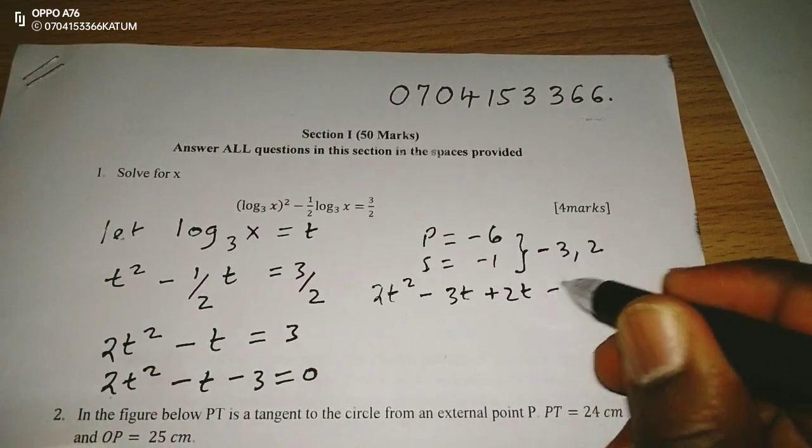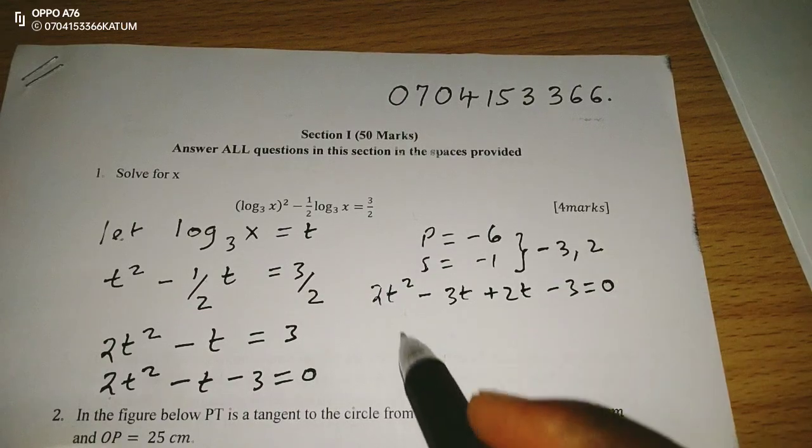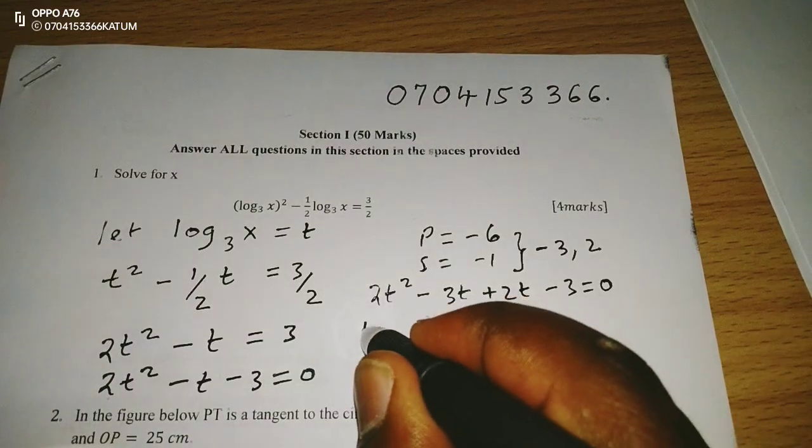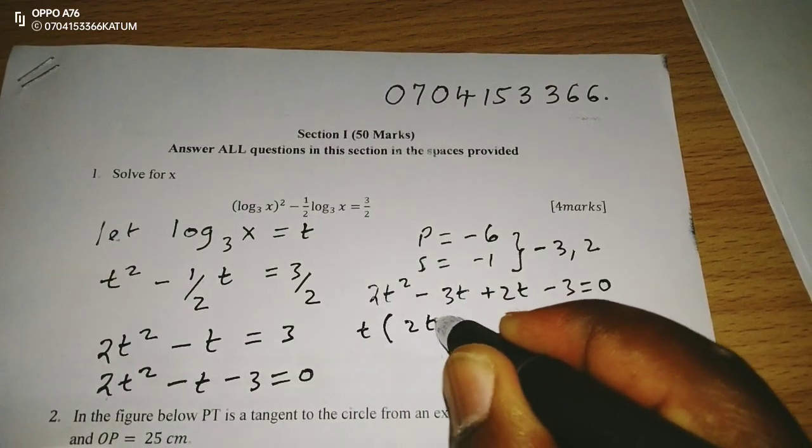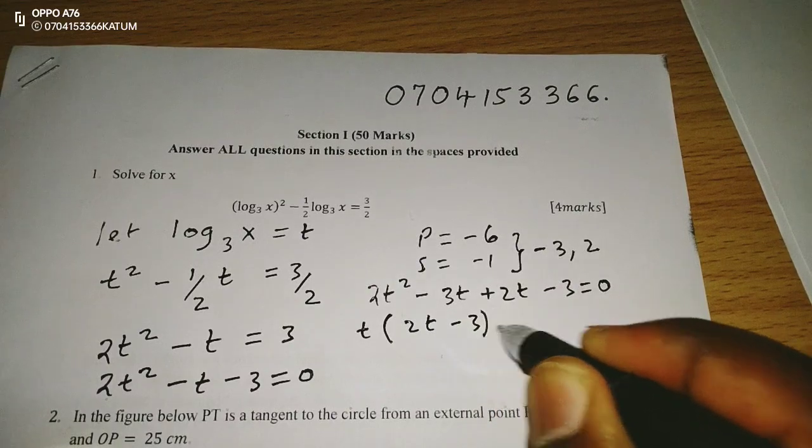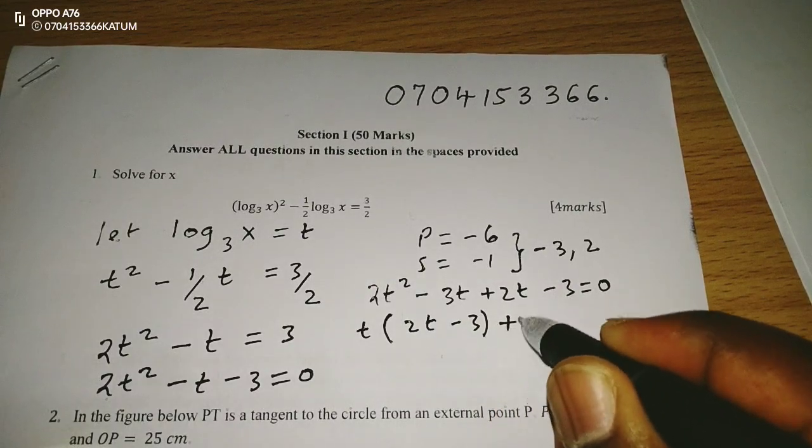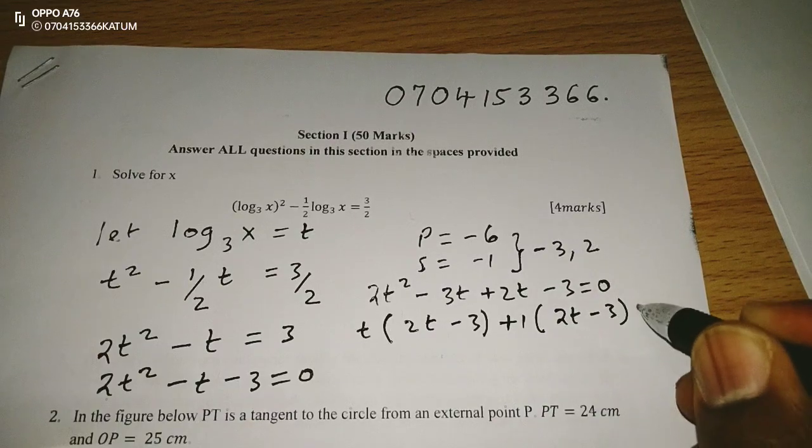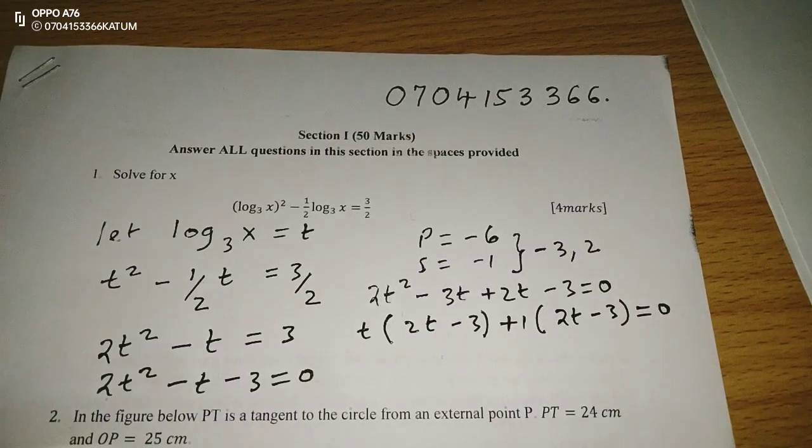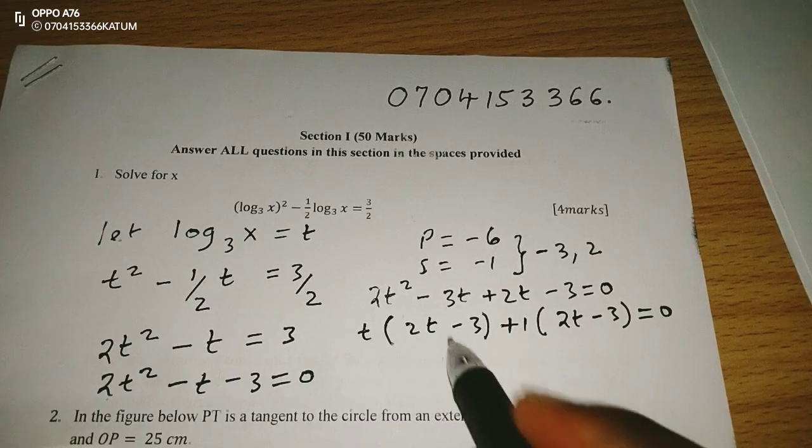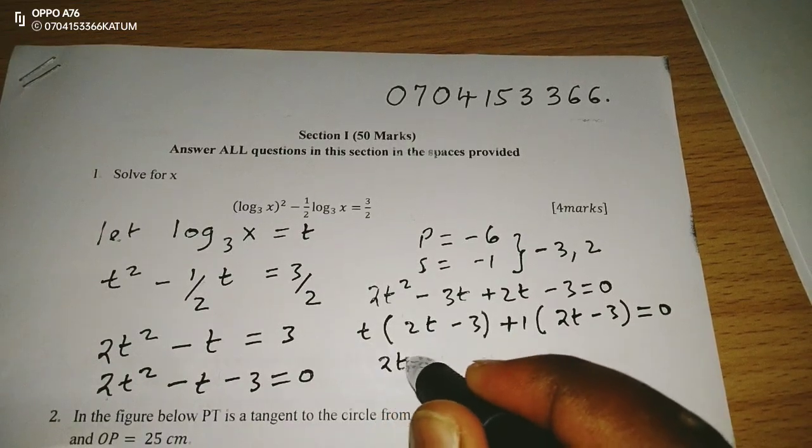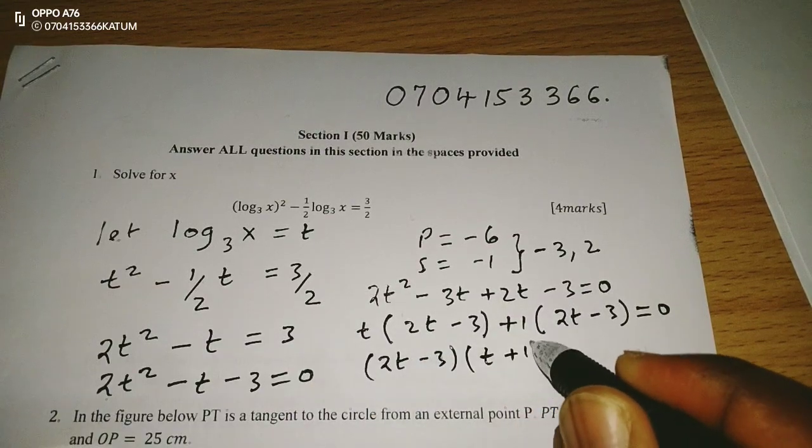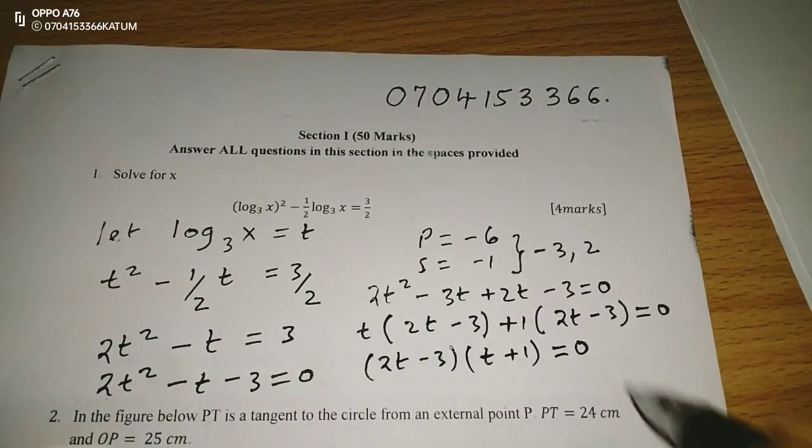Then we have negative 3 equivalent to 0. Then we can factorize: t is common in the first two, to remain with 2t minus 3. Then in the second case, only one, which is common, we remain with 2t minus 3 equivalent to 0. Then now we can talk of 2t minus 3 and t plus 1 being equivalent to 0.